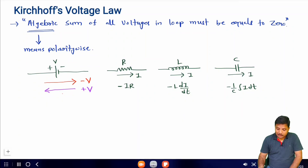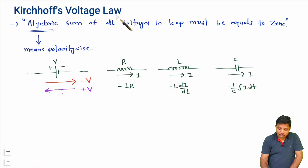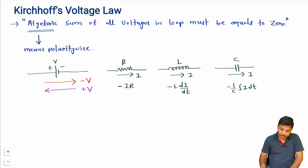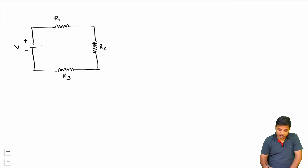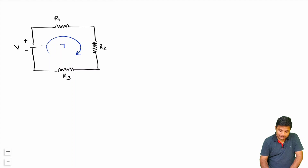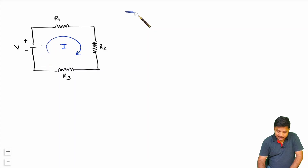Now let us understand this by one practical example, where I will explain a case study. Here we have one loop, and if we say current I is flowing in this loop, we will apply KVL to it.